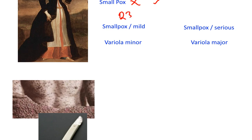At the age of 23, Lady Montague herself had contracted one of the two forms of smallpox. She contracted the mild version, otherwise known as variola minor.